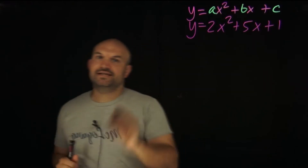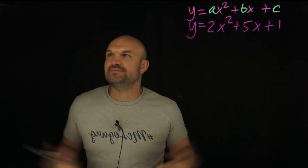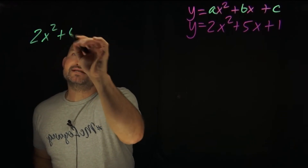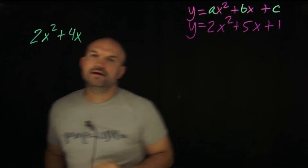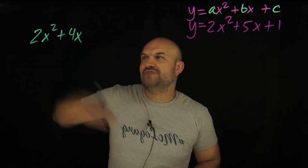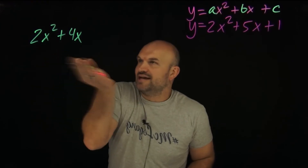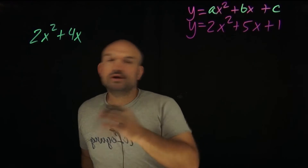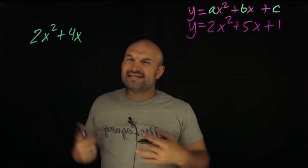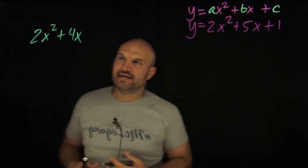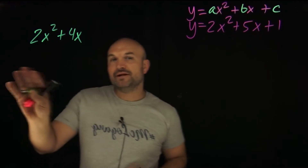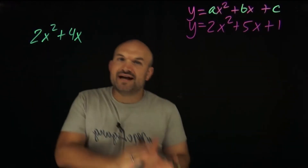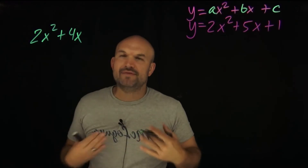Remember if I want to factor out the GCF — one of the first factoring problems we do — I can have something like 2x squared plus 4x. You might recognize that the x's are shared or the 2's are shared. Now once you're comfortable with factoring we say that quickly, but what does it really mean that they both have a factor in common? I'm going to further factor this out so we can understand why we're factoring out those values.